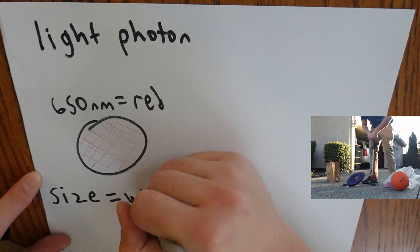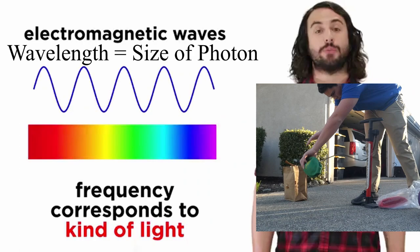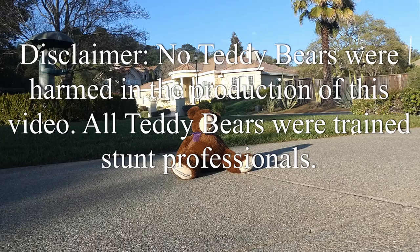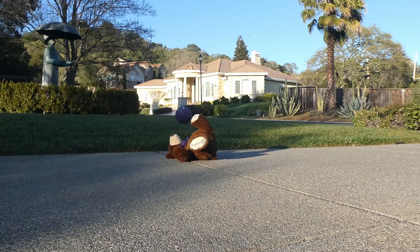Photon particles are around 400 to 700 nanometers. If you tried to use a light microscope to see something smaller or similar in size to 400 to 700 nanometers, it would be like trying to use a dodgeball on a teddy bear. This is the category that viruses fit in.